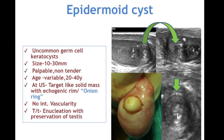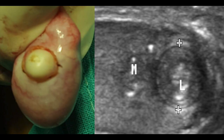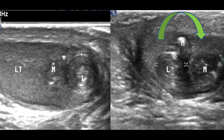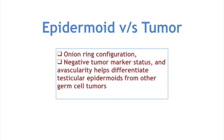Epidermoid cysts are uncommon germ cell tumors or cysts. Size varies between 10 to 30 millimeters. These are usually palpable masses and non-tender, affecting an age range of 20 to 40 years. At ultrasound, these lesions appear as focal rounded target-like lesions with concentric hypo- and hyperechoic layers giving a typical onion ring appearance. We can differentiate epidermoid from tumor by its typical target-like or onion ring configuration, negative tumor marker status, and avascularity.